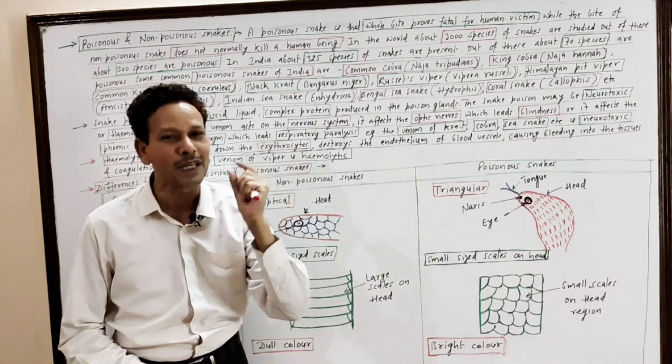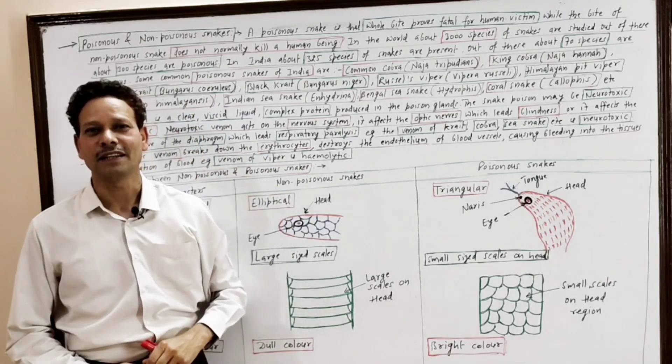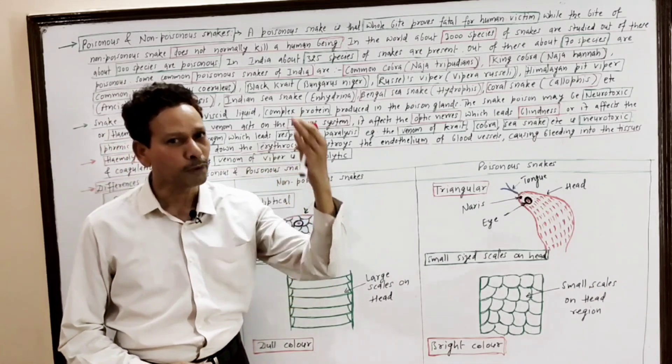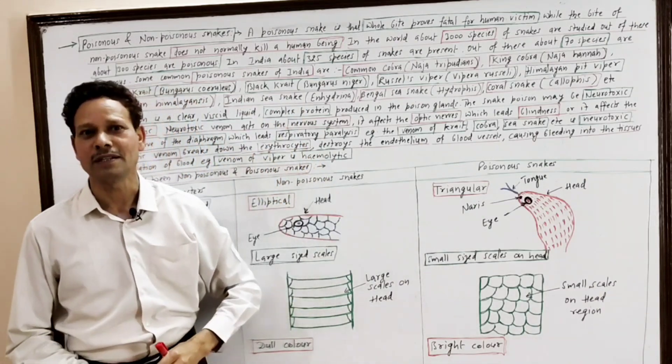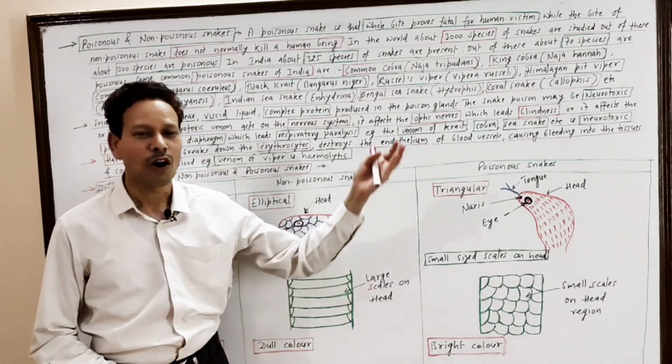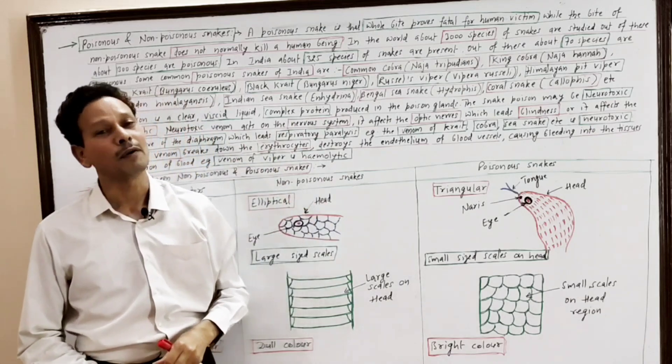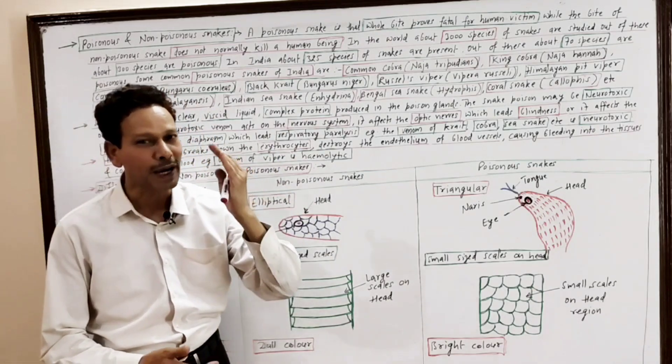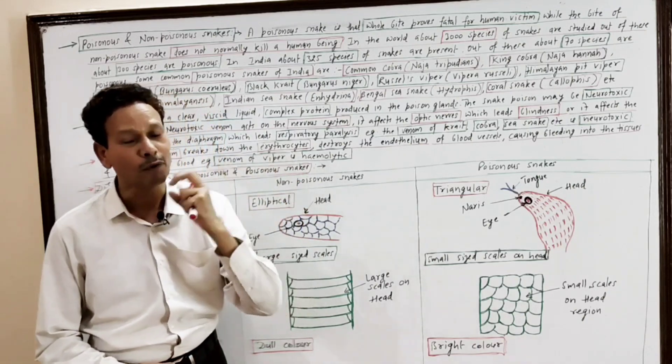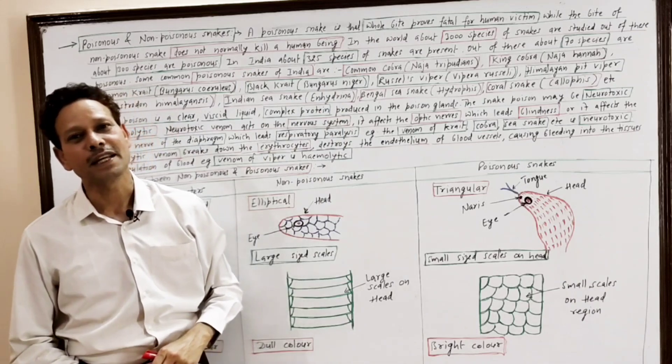Dear students, important topic for BSc students: poisonous and non-poisonous snakes. A poisonous snake is one whose bite proves fatal for human beings, while the bite of a non-poisonous snake normally doesn't kill a human victim.